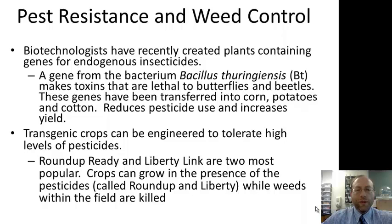GMOs can also be modified for pest resistance and weed control. Previously, farms would be carefully sprayed with an herbicide that kills weeds but not the crop plant, which can be hard to find. But if a plant has a gene conferring resistance to a pesticide—like Roundup Ready crops—you can spray and the weeds get killed while the Roundup Ready plants survive. Or, if the plant produces the pesticide itself, only the insects that try to eat the plant get killed, so beneficial insects in the environment are not harmed.